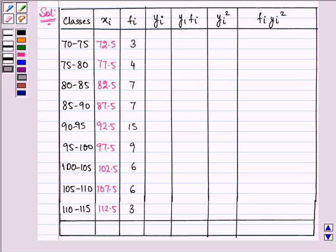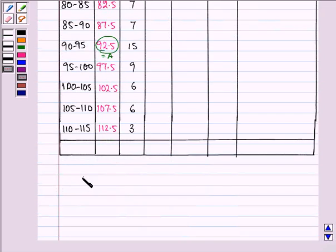Now here we have assumed the mean as 92.5 and the difference of each indicative xi is 5 so we will take h as 5. So what we have over here is we have assumed mean that is A is equal to 92.5 and we have h that is the difference between the consecutive xi's that is equal to 5.